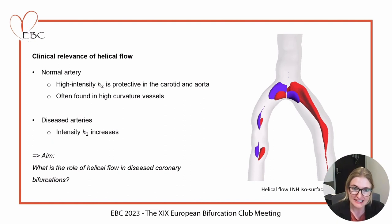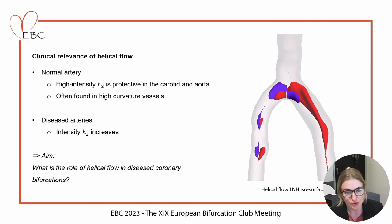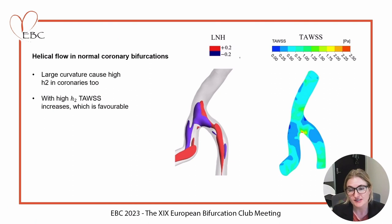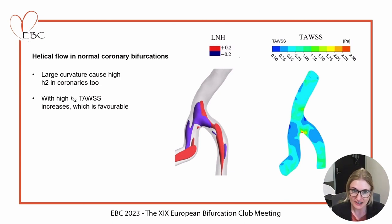How does that change in diseased arteries? Helicity increases with narrowing as we get more rotation motion. What we wanted to find out is the role of helical flow in diseased coronary bifurcations. We first looked at normal coronary bifurcations — the isosurfaces and the time-average wall shear stress — and found that very large curvature also causes higher helicity intensity in the coronaries.